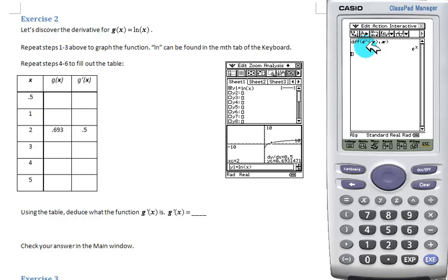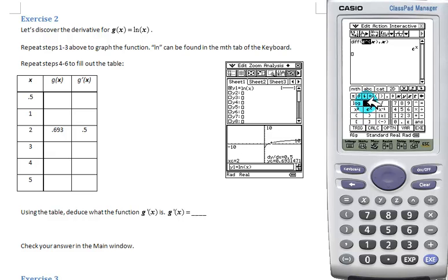And we can check our answer in main. I can just highlight e to the x, change it to natural log, hit EXE, and get our derivative as 1 over x.